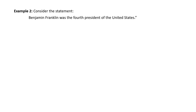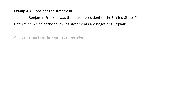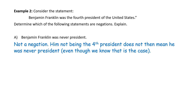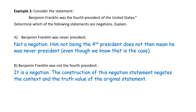Consider the statement: 'Benjamin Franklin was the fourth president of the United States.' Determine which of the following are negations. A: 'Benjamin Franklin was never president.' That is not a negation — him not being the fourth president does not mean he was never president, even though we know that is not the case. B: 'Benjamin Franklin was not the fourth president.' That actually is the negation — this statement negates the content and the truth value of the original statement.